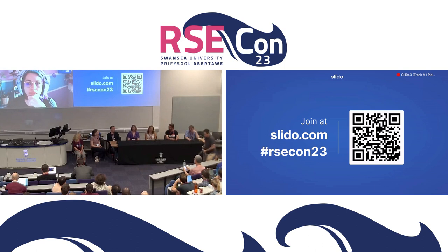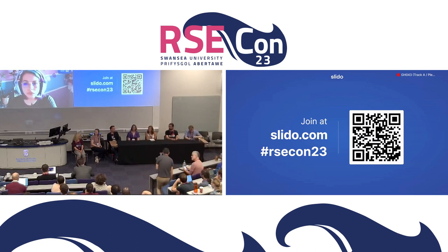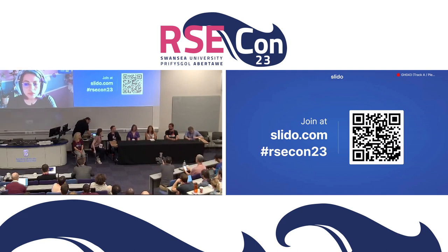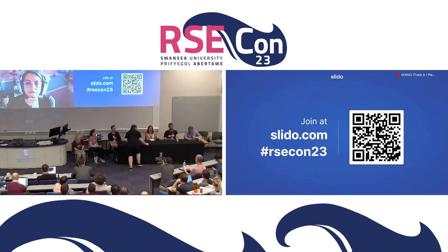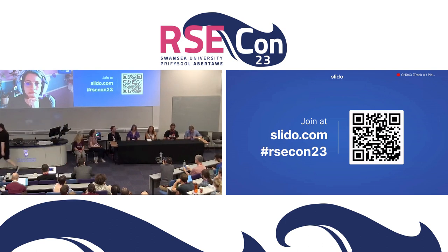I'm a senior scientific software engineer at the Met Office. I have a background in astronomy — I did a PhD at the University of Leicester, then got a job at Gemini Observatory in Chile as a data processing developer, developing software for astronomers to process data from the telescopes. After looking to move back to the UK, I now help climate scientists process their data.